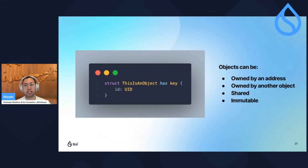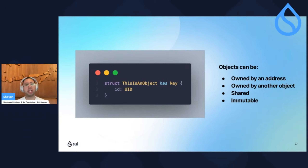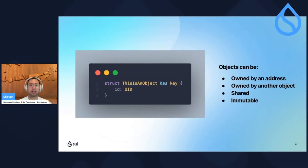Objects can also be owned by an address — so that would be like Alice owning a token. Objects can be owned by another object. If you think of an RPG game, a hero collecting armor or tokens — those various items can be owned by the object itself. Objects can be shared, meaning anybody can interact with them, like a deck or NFT. And objects can be immutable, meaning people can only take a read-only reference to them.